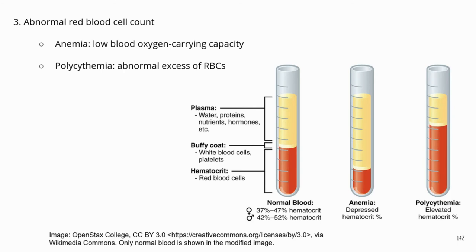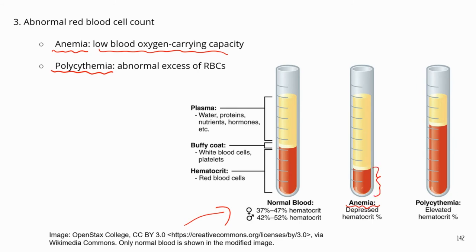The third condition is about red blood cell count. If you have a very low red blood cell count, that can lead to anemia — a condition where the body has very low blood oxygen-carrying capacity. This can be caused by many reasons, such as insufficient iron or blood loss. On the other hand, if the body has too many red blood cells, that condition is called polycythemia. In the diagram, anemia shows a much lower volume of red blood cells than normal, while polycythemia shows a much higher volume.